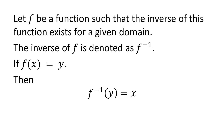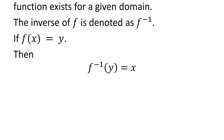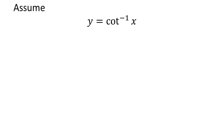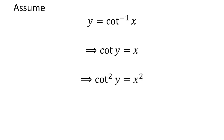We will apply these properties to solve sine of arccotangent of x. To find out the value, let's assume y is equal to arccotangent of x. As arccotangent is the inverse of cotangent, cotangent of y is equal to x. Squaring both sides doesn't change the equation, so we get cotangent squared of y is equal to x squared.